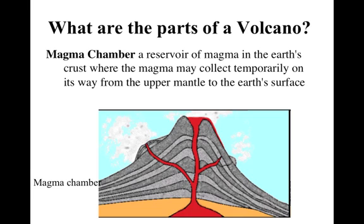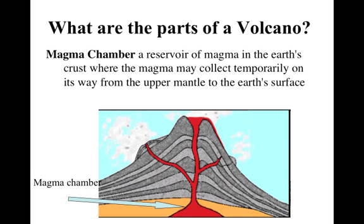A volcano isn't a direct pipeline to the mantle. Generally what happens is there's a weakening of the crust in the lithosphere and some magma starts to build up there and collects enough pressure that it can push through. That area where it collects is called the magma chamber, and it's down here at the bottom, underneath the ground of the volcano.